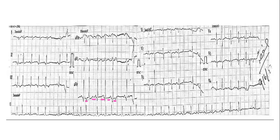Look at limb lead 2 because this is a good lead for the P waves. So do you think it's very grossly irregular? Look at the RR cycle length. Is it irregularly irregular or is it pretty regular with a bit of variation? What do you think? Do you think it's very irregular? No, it's not.